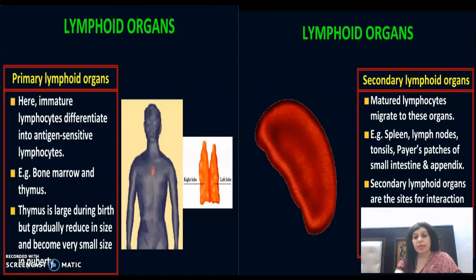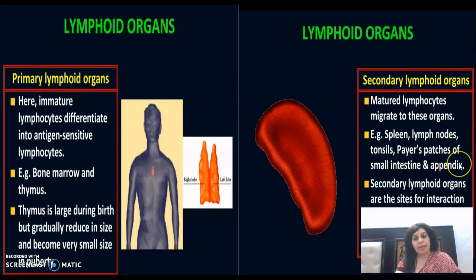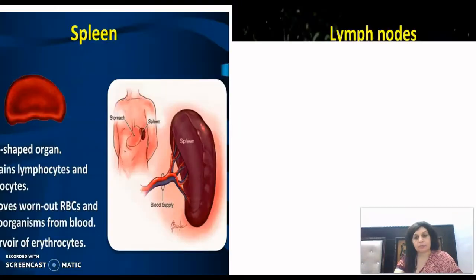Secondary lymphoid organs में spleen, lymph nodes, tonsils, Peyer's patches of small intestine, और appendix आते हैं। यह सारे secondary organs वो sites हैं जहाँ पर lymphocytes antigens के साथ react करते हैं और effector cells बनते हैं।